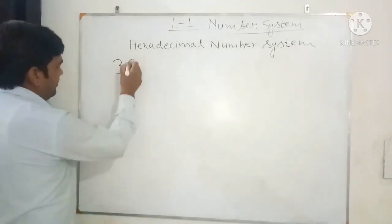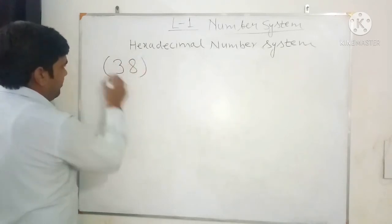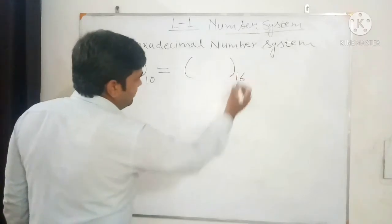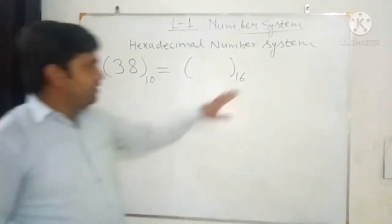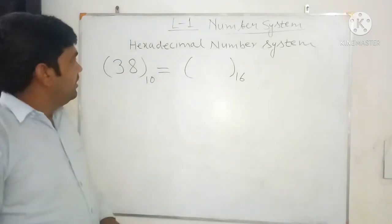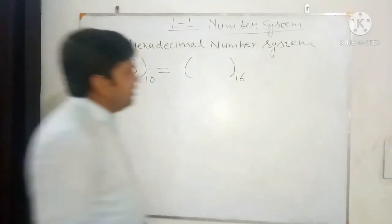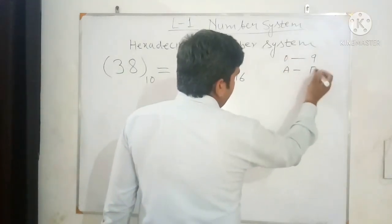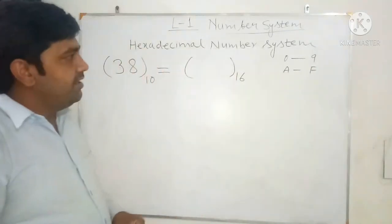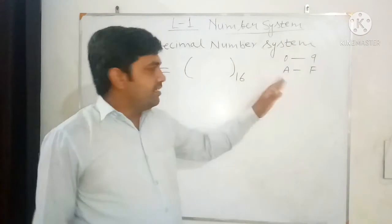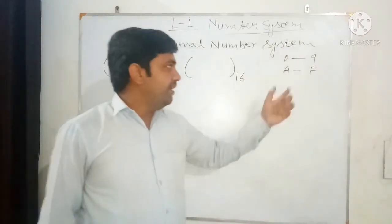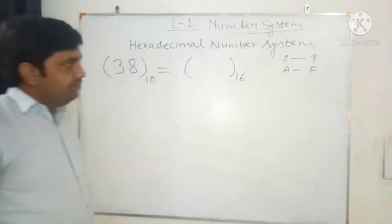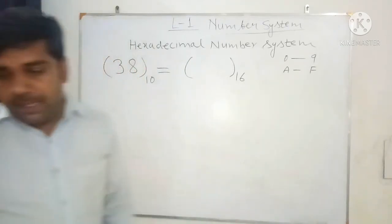We consider the example 38, a decimal number to convert into hexadecimal. The base of the hexadecimal number system is 16, and the allowable digits are 0 to 9 and A to F. So 16 different digits are allowed: 0 to 9 and alphabets A, B, C, D, E, F.